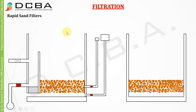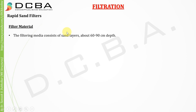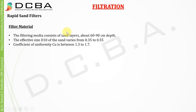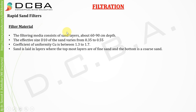Above the gravels comes the filter media — again, same as slow sand filter. The sand filter media consists of sand layers about 60 to 90 cm in depth. The effective size D10 of the sand varies from 0.35 to 0.55. The coefficient of uniformity Cu is between 1.3 to 1.7. Sand is laid in layers where the topmost layers are fine sand and the bottom is coarse sand.